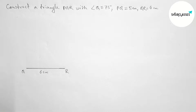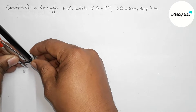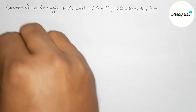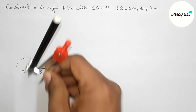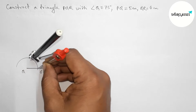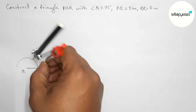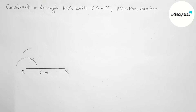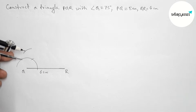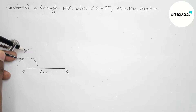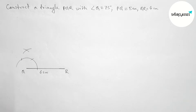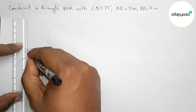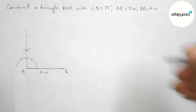Putting the compass on Q and taking any length, first drawing an arc. Now putting the compass on that arc point and taking the same length, cutting here with the same length. Putting the compass again and cutting here, drawing another arc with the same length, and cutting again. Now joining this line to get a 90 degree angle — we have got a 90 degree angle.